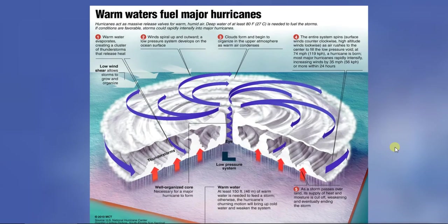Another low pressure system example would be a hurricane. Hurricanes have a very, very low pressure system. The lower the pressure, the faster the winds move. The faster the winds move over large surface areas, the more you get that spinning motion.